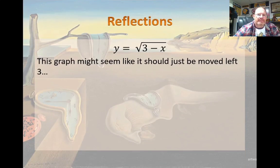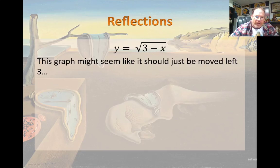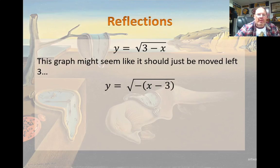Let's take this example here. If you take a look at 3 minus x underneath that radical, that 3, since it's positive, would indicate to you that it should be moved to the left. But in actuality, that's not true. What I'm going to do is factor out the negative here.